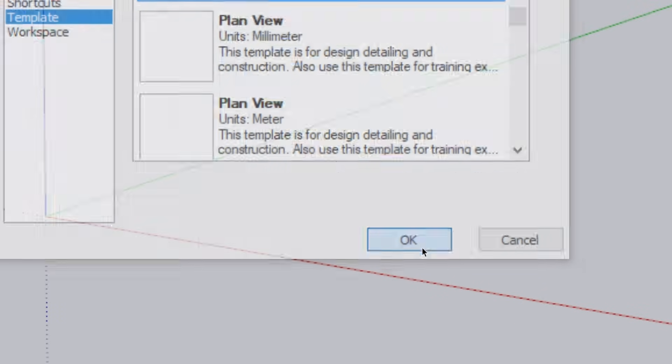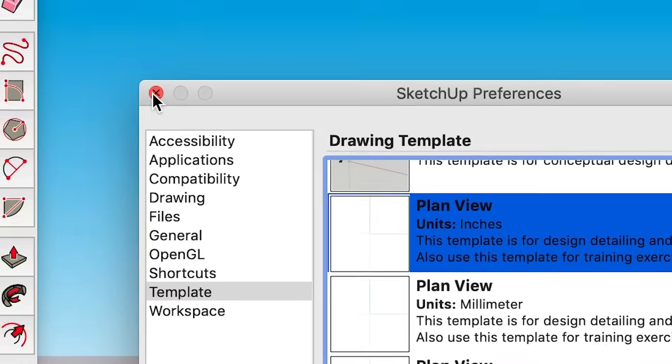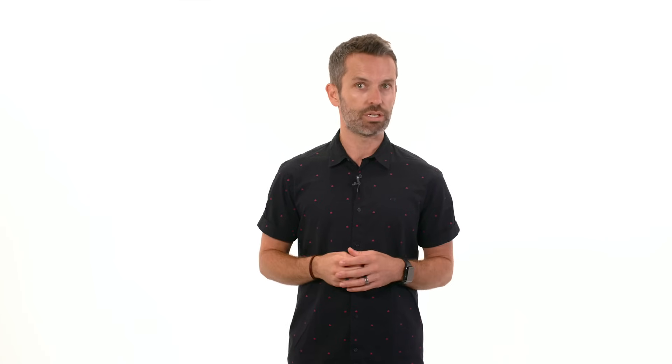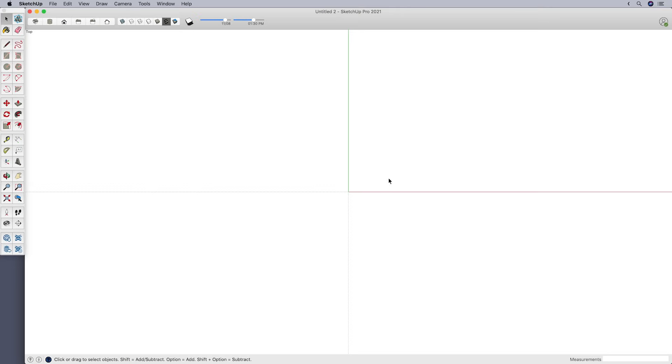Depending on what version of SketchUp you're using, the template will be named differently. It might say plan view or construction documentation. Just make sure that the thumbnail has a white background like this one here. And that you choose feet and inches or meters depending on which you use for your projects. If you're a Windows user, you'll click the button at the bottom right to finish. Mac users, you just close the window.